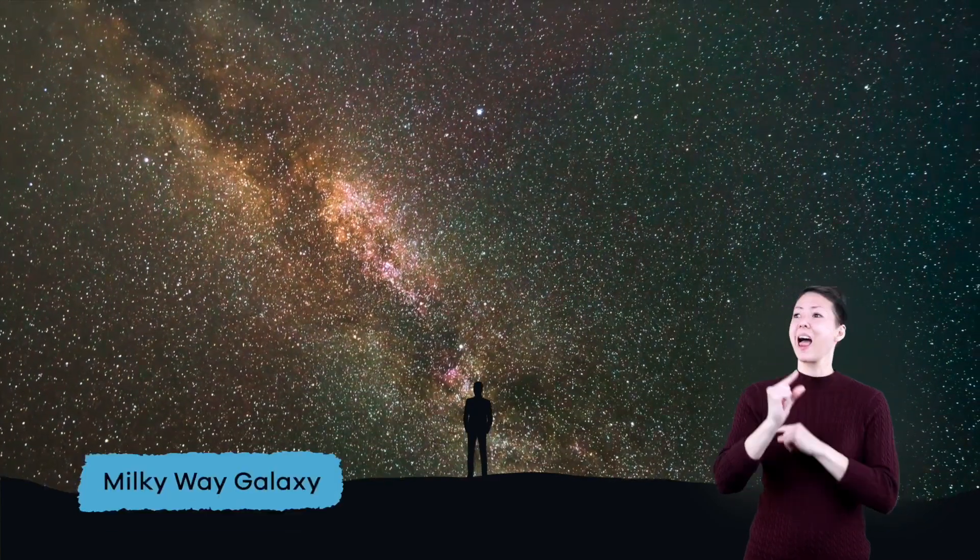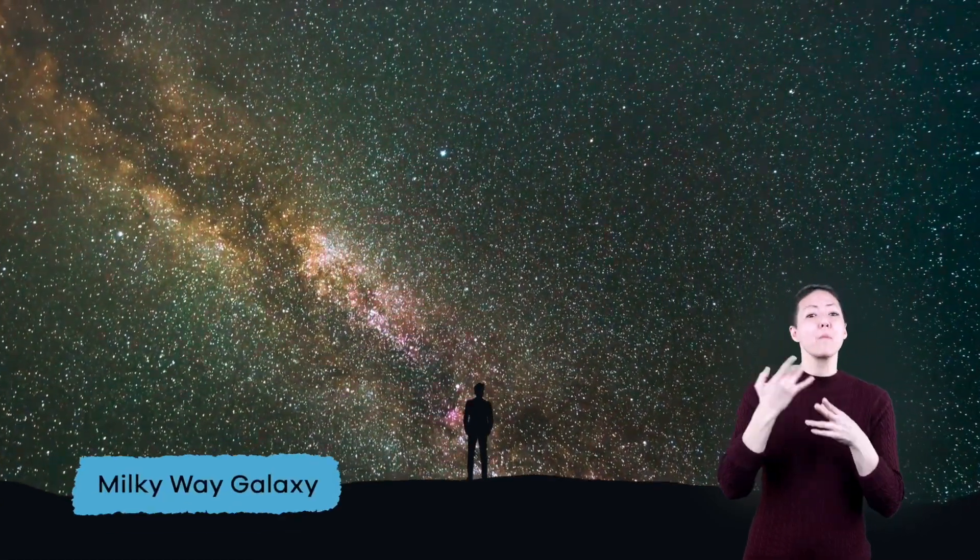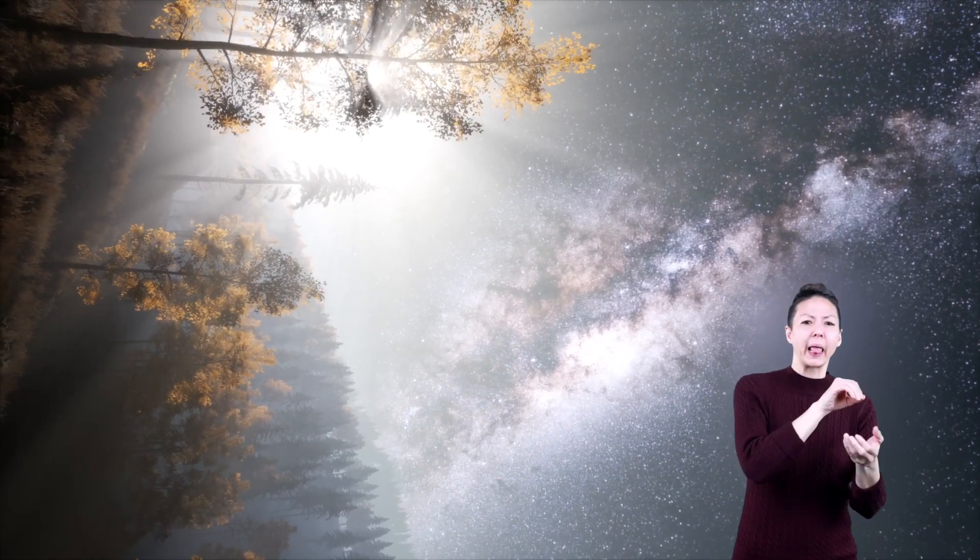Galaxies are enormous, and our universe is made up of billions of them. The name of our galaxy is the Milky Way Galaxy. It gets its name because all those white stars look like a giant spilled glass of milk.